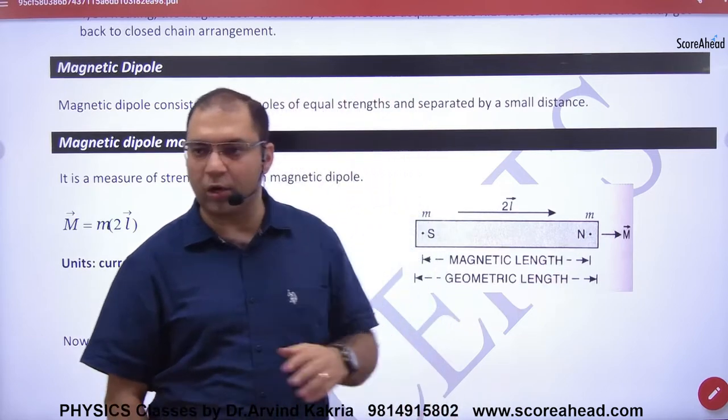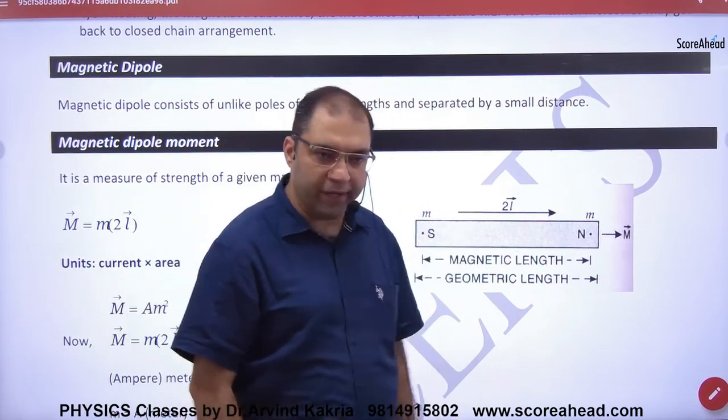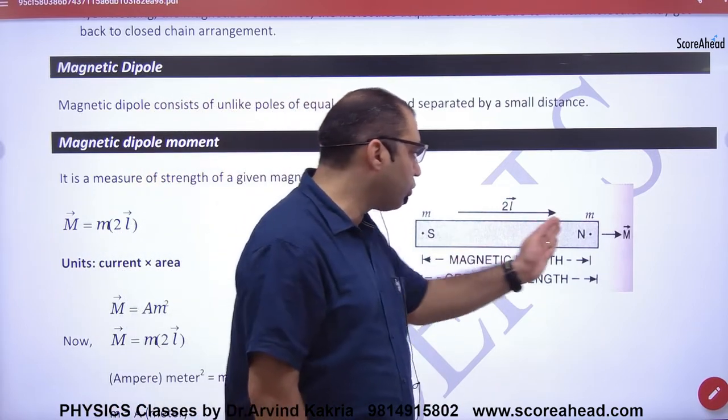If it is a magnet, a bar magnet is south and north. There are two poles. Pole strength is a small M. So magnetic dipole moment is from south to north.